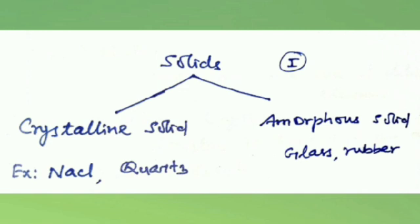Sodium chloride and quartz are some examples of crystalline solids. Glass, rubber, amorphous quartz, and plastics are some examples of amorphous solids.